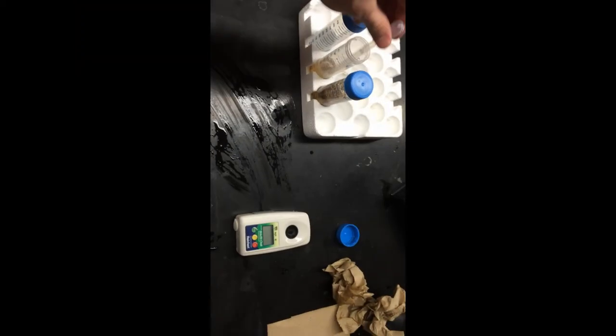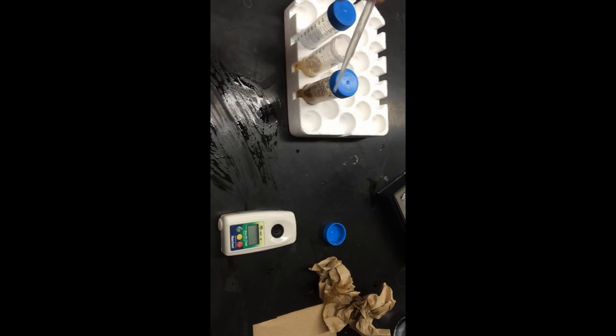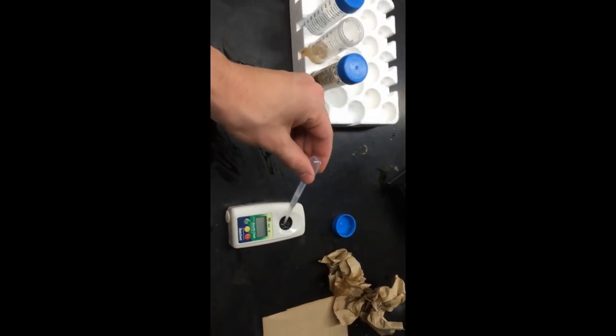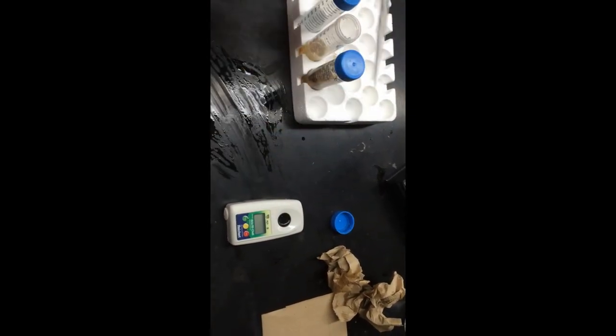Test the initial soluble carbohydrate concentration using the refractometer. Record the BRICS number along with the liquid volumes and mass.